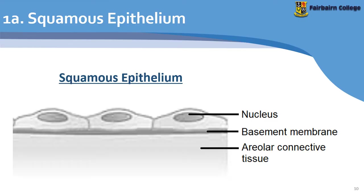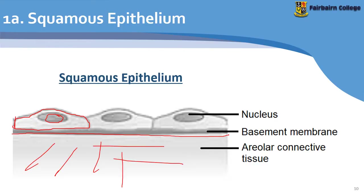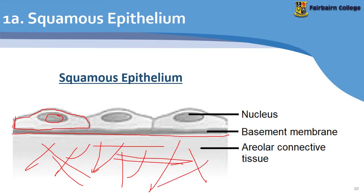Here is the diagram you have to draw for squamous epithelium. You draw three brick-shaped cells with their nuclei, then draw the basement membrane below them, and then indicate the areolar connective tissue with a couple of lines. The areolar connective tissue connects or binds the epithelium with the lower layers — we'll look at that later. Make sure you make this drawing in your books and don't forget the heading.